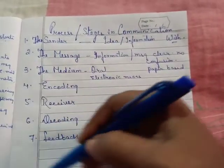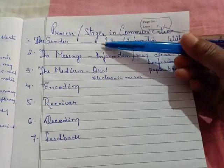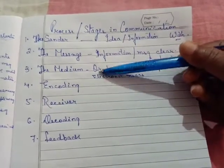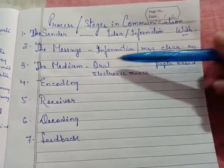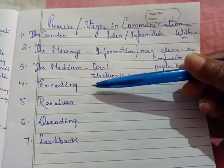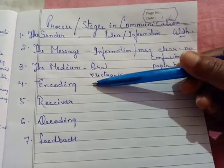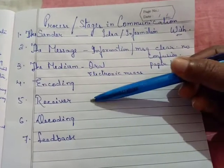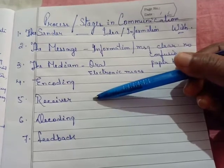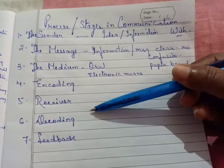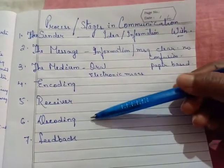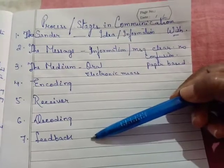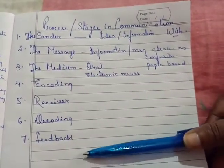To sum up, the stages involved in communication are: sender — the person who sends the message; message — the information which the sender wants to convey to the receiver; medium — the tool or vehicle through which the sender sends the message; encoding — attaching the simplest meaning to complex information or idea; receiver — without whom communication cannot take place; decoding — what the receiver understands from the sender's information; and feedback — the replies given by the receiver to the sender.